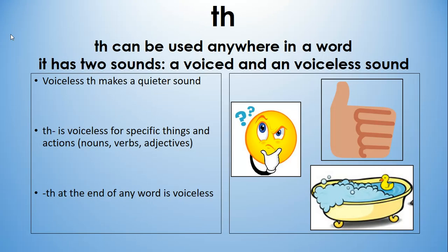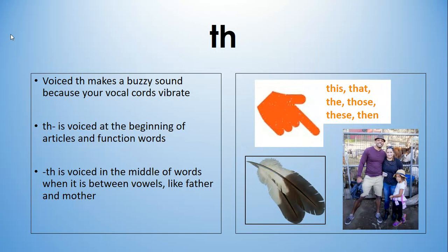TH can be used anywhere in a word. It has two sounds: a voiced and a voiceless sound. To show students the difference, you may want to gently have them put their fingers against their vocal cords in their throat. The voiceless TH is quieter, and we make that sound by gently putting our tongue between our teeth. TH is voiceless at the beginning of words when we're talking about specific things, and TH at the end of any word is voiceless — like bath.